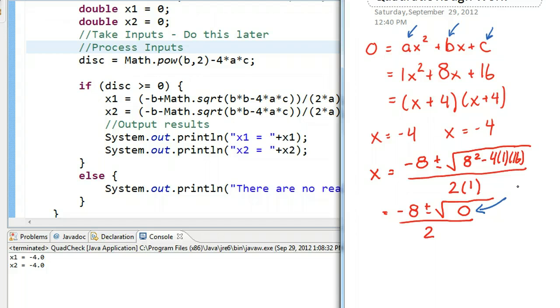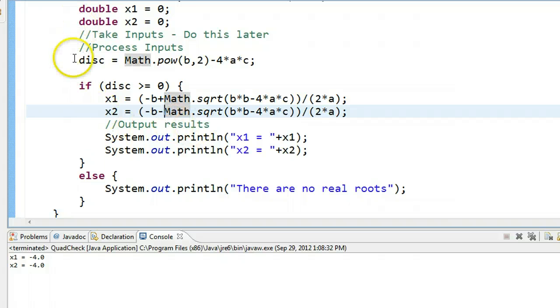So the discriminant is 0. Let's go to our program and let's see if we can account for that. So if I take a look here, I'm going to read through the flow of this program.